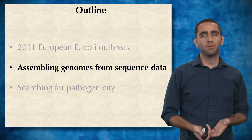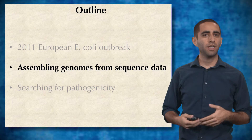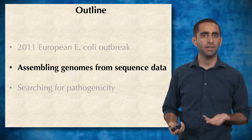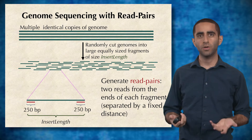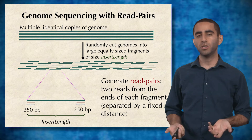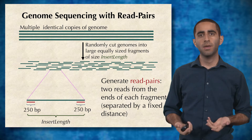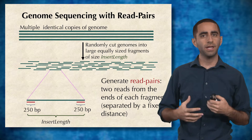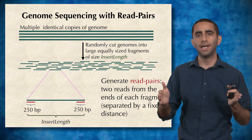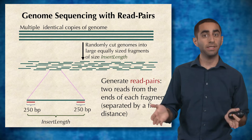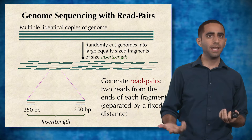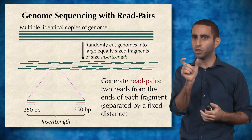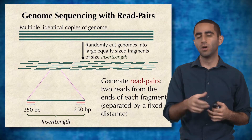Before we can talk about genome assembly, we have to first talk about how the data gets generated. With whole genome sequencing, basically because of limitations of the devices, we cannot just sequence an entire chromosome from end to end. Instead, these devices can only sequence small chunks called reads.